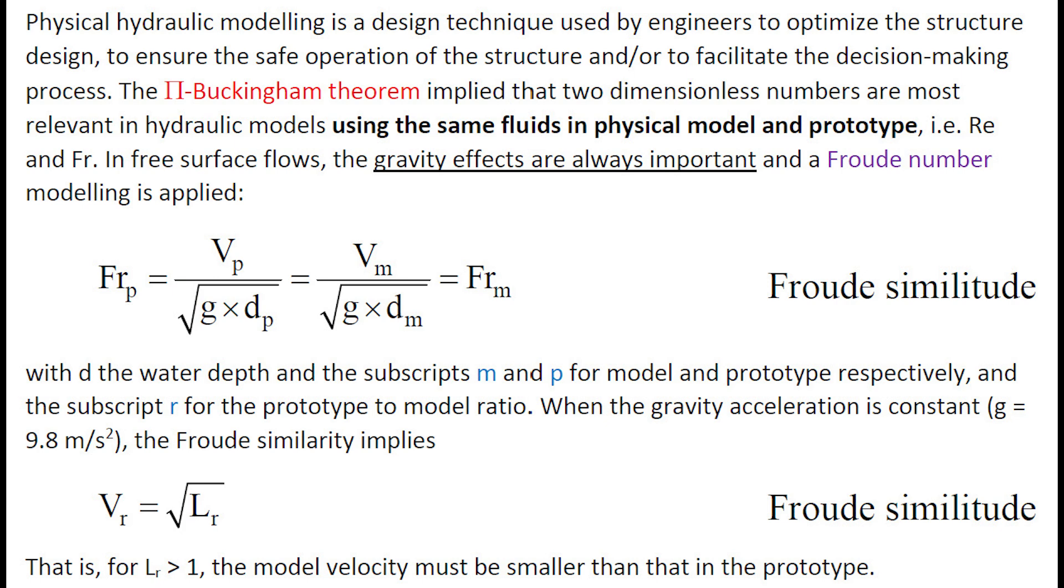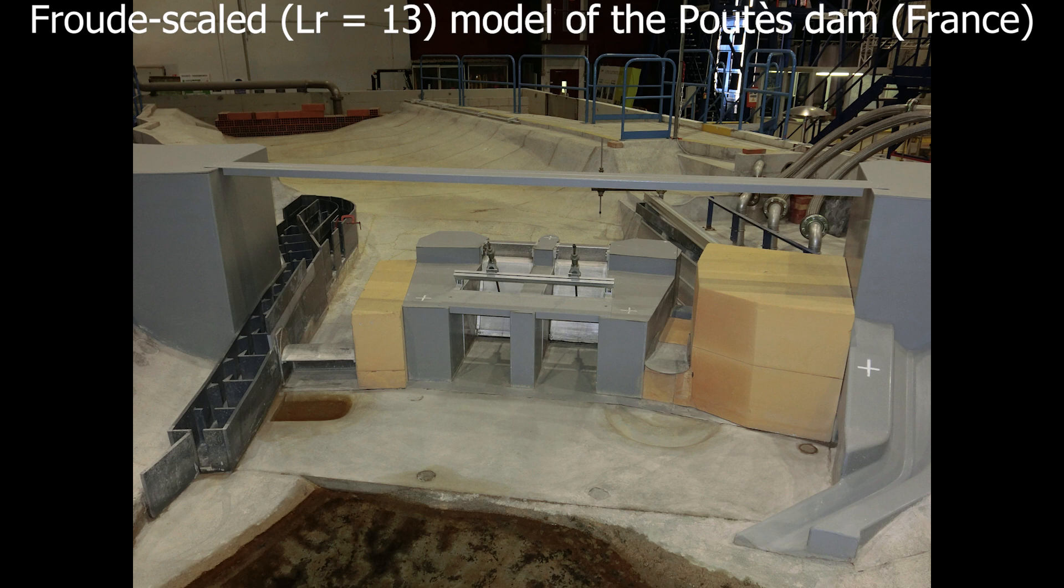With the Froude number being the same in model and prototype, and when the gravity acceleration is constant, Froude similarity implies that the velocity scaling ratio is equal to the square root of the dimensional scaling ratio. This photograph illustrates a 1-in-13 scale model of the Poutès Dam in France.